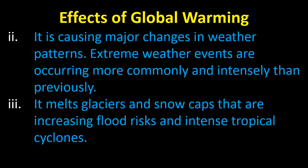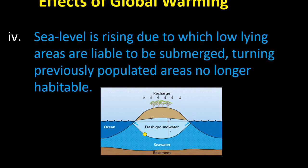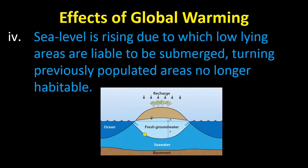Extreme weather events are occurring more commonly and intensely than before. Global warming melts glaciers and snow caps, increasing flood risks and producing intense tropical cyclones. A very dangerous effect is the rising sea level, due to which low-lying areas are liable to be submerged, turning previously populated areas no longer habitable.